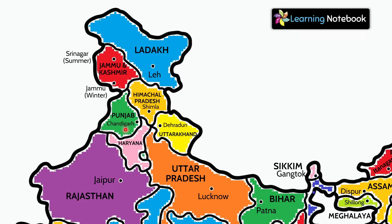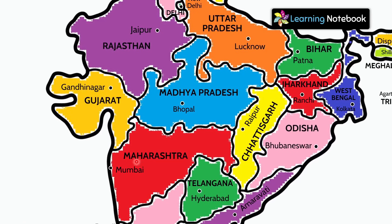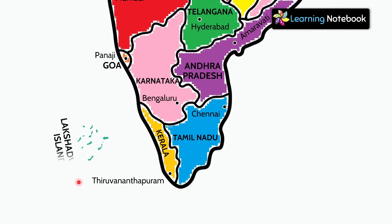Next is Chandigarh. It is a union territory and is the capital of Punjab and Haryana. This is Delhi and its capital is New Delhi. Now the next union territory is Dadra and Nagar Haveli and Daman and Diu, and their capital is Daman. Next union territory of India is Lakshadweep Islands and its capital is Kavaratti.